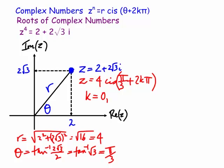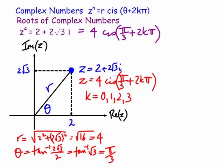Since we're taking the fourth root, k goes from 0 to 3. So we write z⁴ = 4 cis(π/3 + 2kπ), and then take the fourth root of both sides.